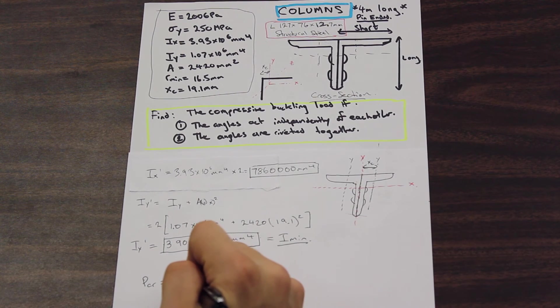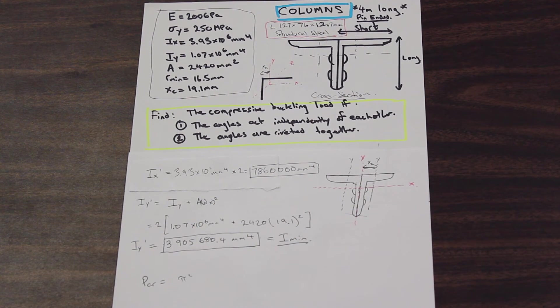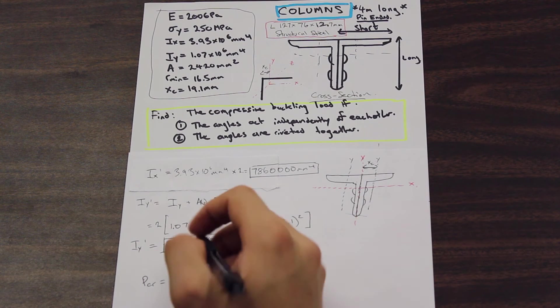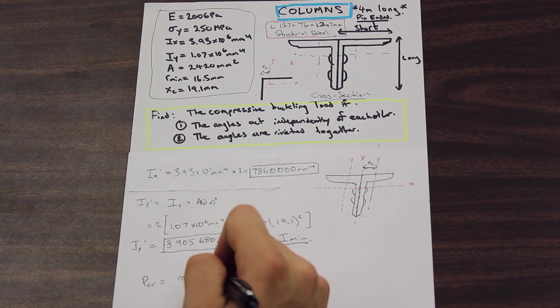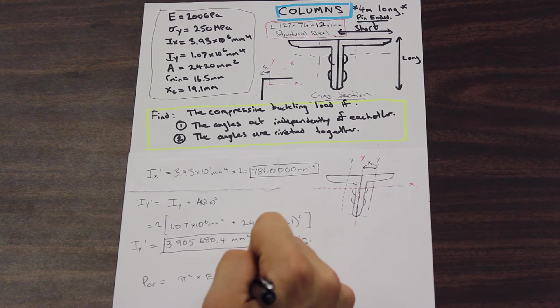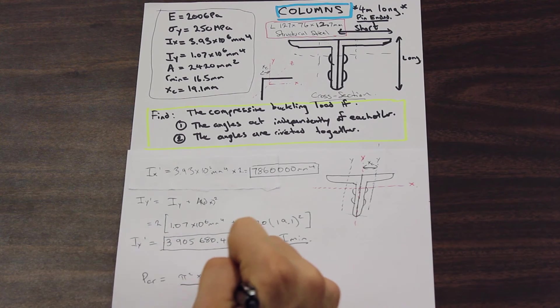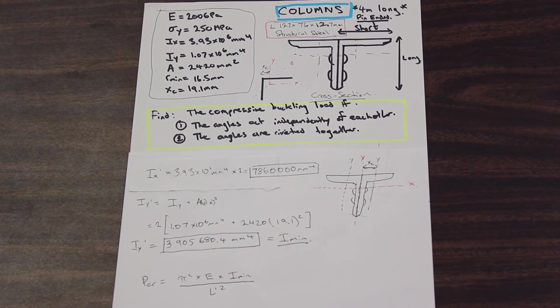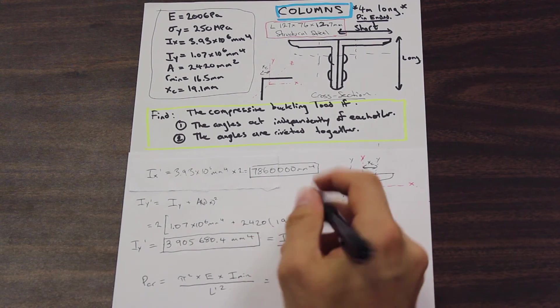The rest is going to be up to you. So let's just go back to our formulas that we were given earlier, which is we have pi squared times E times I_minimum over L_prime squared, same thing as before.